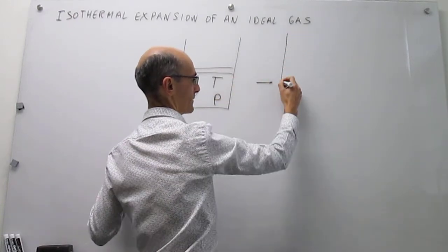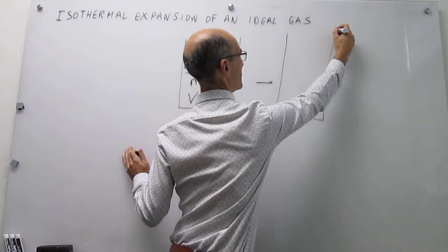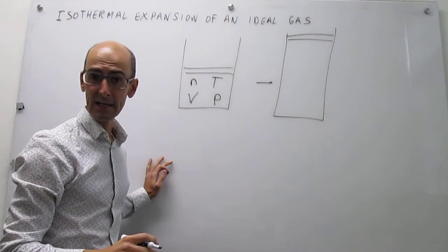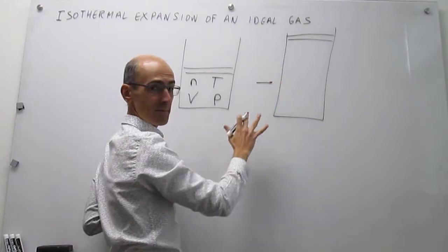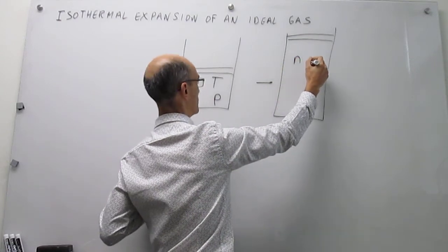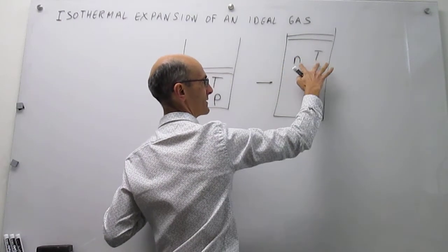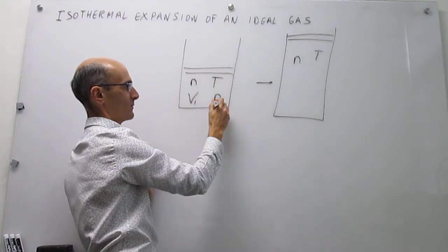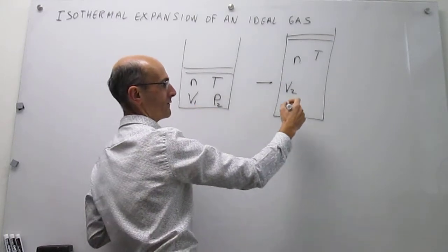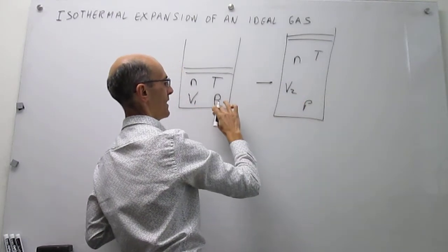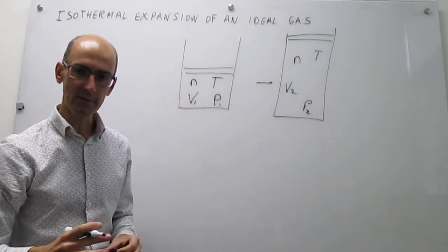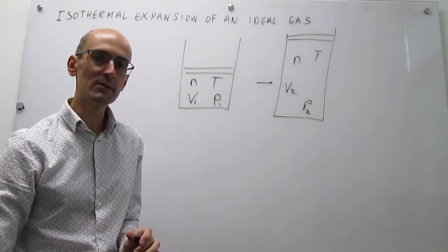Now we're going to let this expand isothermally, so the final volume will be larger. The key here is that this is isothermal. The system is also closed, so there's no change in moles. Because there's no change in moles and the system is isothermal, these two variables do not change, but volume and pressure do change. You will have a V2 which is larger than V1, and a final pressure that is smaller than the initial pressure. That's the setup: isothermal expansion of an ideal gas.